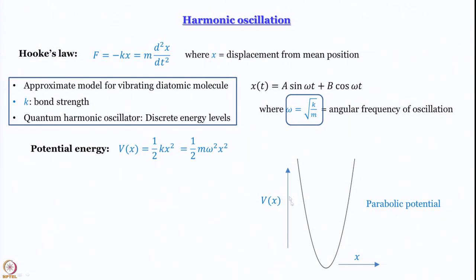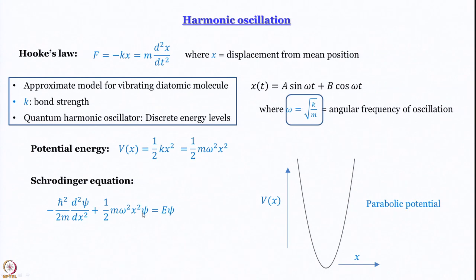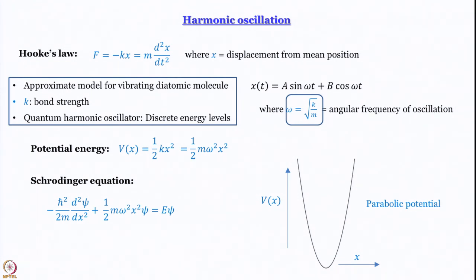What we do is take this parabolic potential and plug it into the Schrödinger equation in place of V. The first term remains the same — the kinetic energy term — and the potential energy term becomes (1/2)mω²x²·ψ = Eψ. The beauty of Schrödinger's treatment of quantum mechanics is that you start with classical quantities, and then when you try to interpret the wave functions, the unique features of the quantum world manifest themselves automatically — that is what will happen here as well.